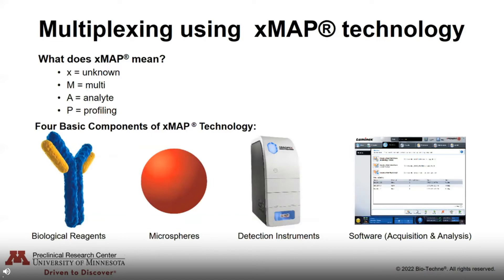In our center, we use multiplexing analysis for our cytokine research, and we do this using xMAP technology from Luminex. xMAP stands for Cross-Reactive Material Multi-Analyte Profiling and is comprised of four basic components: biological reagents — the capture antibodies — microspheres to which the capture antibodies are bound and co-incubated with your sample, specific detection instruments, and dedicated software for the acquisition and analysis of your cytokine data.